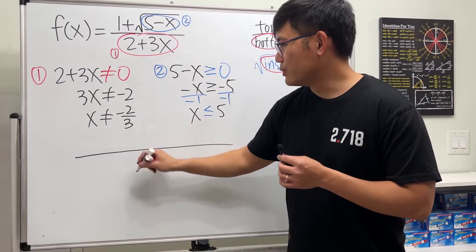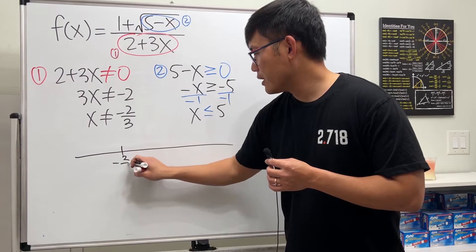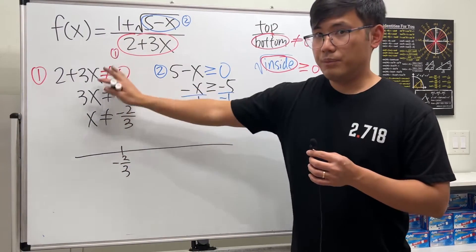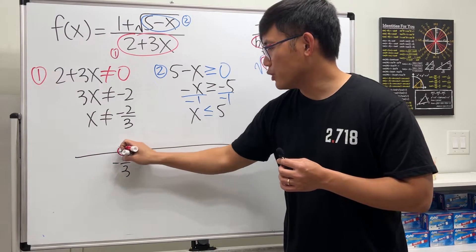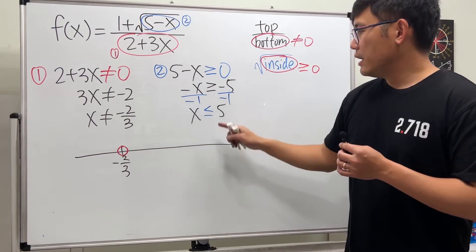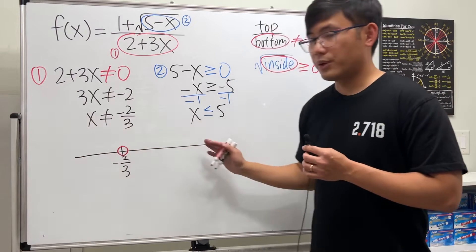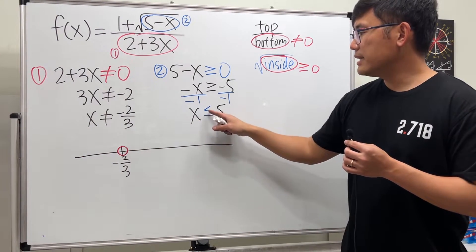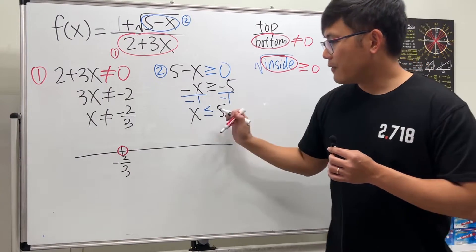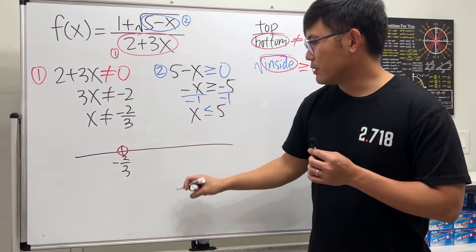Here's the number line. Let's say we have negative 2/3 right here. Because of this, we don't want x to be negative 2/3, so we have to put an open circle. Everything else we are going to take, but we also have this condition: x has to be less than or equal to 5. 5 is bigger than the negative number, so let's put it on the right-hand side.